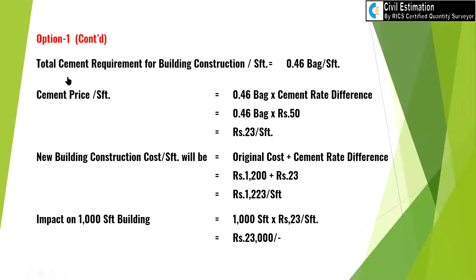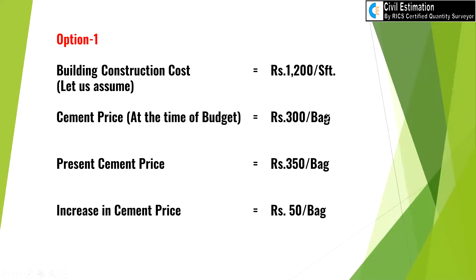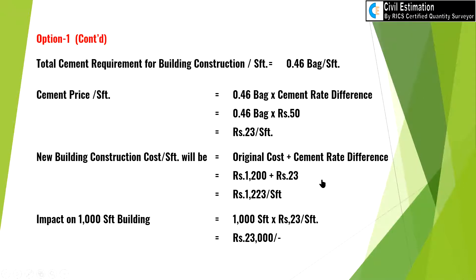To calculate that, first we need to know the total cement requirement for building construction per SFD, which is 0.46 bag per SFD. This 0.46 bag covers from the footing to the rooftop waterproofing flushing. The cement price increase per SFD is 0.46 bag multiplied by the cement rate difference of 50 rupees per bag, giving 23 rupees per SFD. The new building construction cost per SFD is 1200 plus 23, equal to 1223 rupees per SFD.